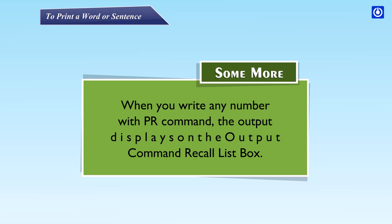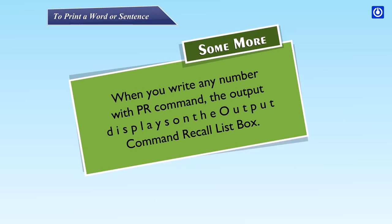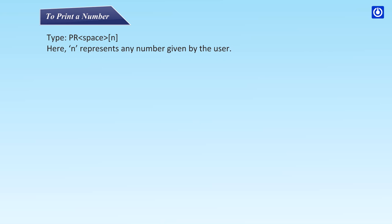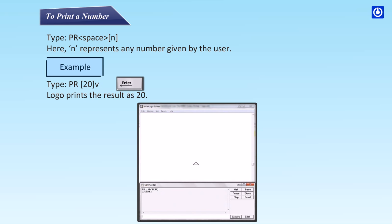When you write any number with the PR command, the output displays in the output/command recall list box. To print a number, type PR followed by a number N. For example, type PR 20 — Logo prints the result as 20.